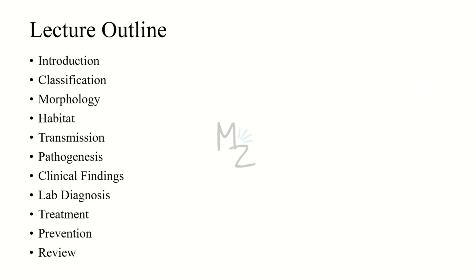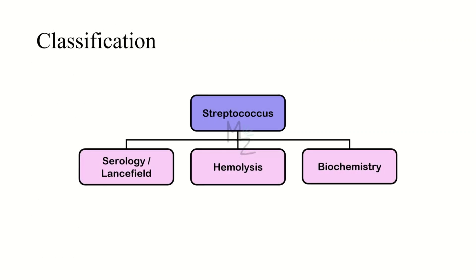Lecture outline: we are done with the introduction and now we'll be talking about classification, morphology, habitat and transmission, pathogenesis, clinical findings, lab diagnosis, treatment, prevention, and at the end we'll review the lecture. Streptococcus agalactiae is further classified based on serology — the Lancefield classification — where strep agalactiae belongs to group B, and also on the basis of hemolysis and biochemistry.